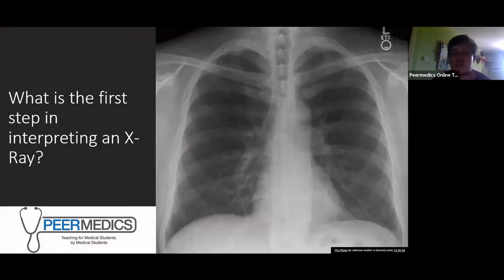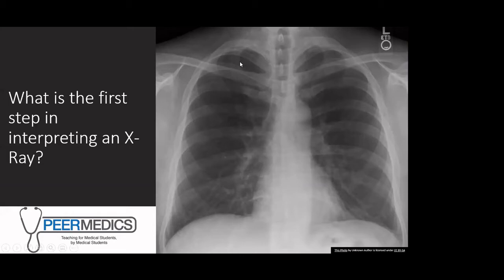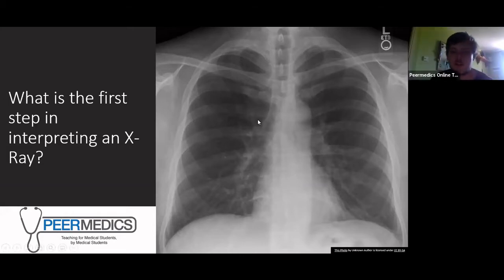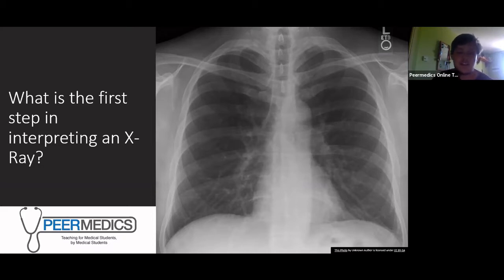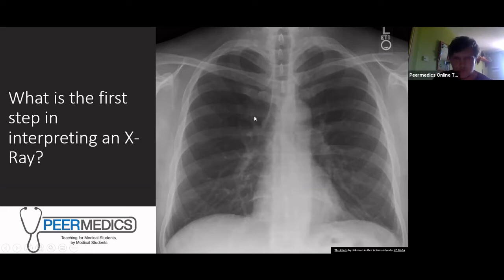When you're in your OSCE or on a ward round and someone gives you a chest X-ray, the first thing you want to do is check the patient's details — make sure you've got the right patient. Then look at the date and time the film was taken, because there's no point looking at a film done a month ago unless you're comparing it. Also check if there's any previous imaging available.